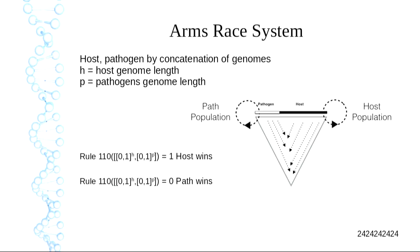If the host wins, it goes back into the host population; if the pathogen wins, it gets dumped back into the pathogen population. We keep fixed population sizes. We write it as: zero to one to the length of the host, and zero to one for the length of the pathogen. If it's a one, the host wins; if zero, the pathogen wins. When the pathogen wins, it's winning with a genome from the host that was previously winning — so it won before but is losing now — and the same for the pathogen.